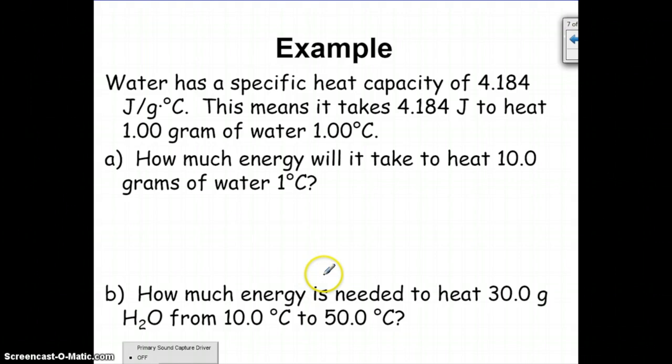Here's an example. If water has a specific heat capacity of 4.184 joules per gram degree Celsius, this means it takes 4.184 joules to heat 1 gram of water by 1 degree Celsius.